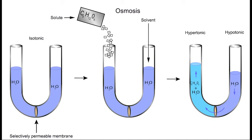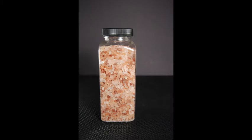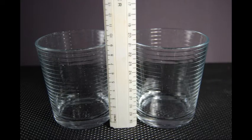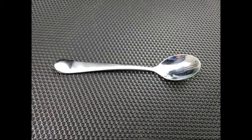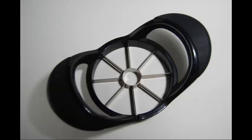We're going to investigate transport across a living membrane. The following materials are necessary: measuring cup in milliliters, table salt or sodium chloride, weight scale in grams, two small plastic cups or glasses, a spoon, two or three potatoes, and an apple corer.